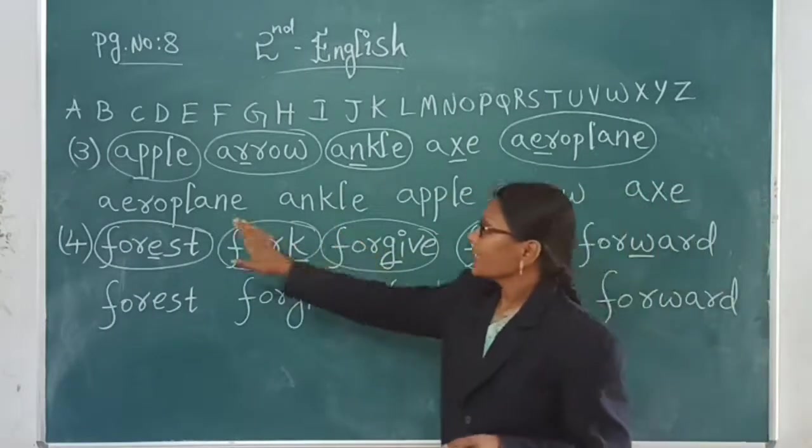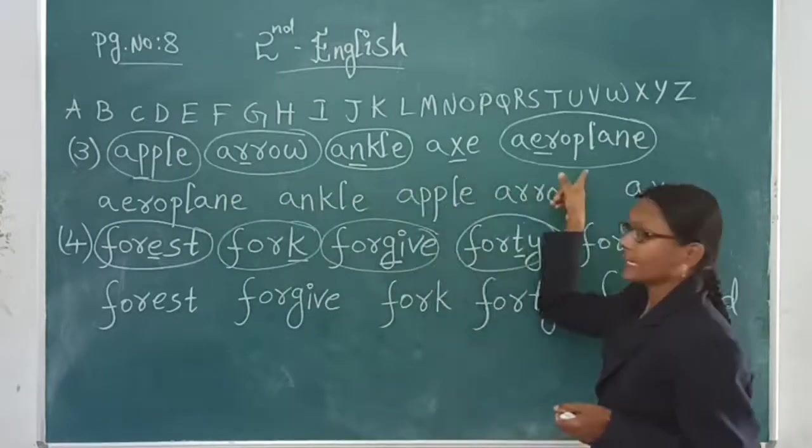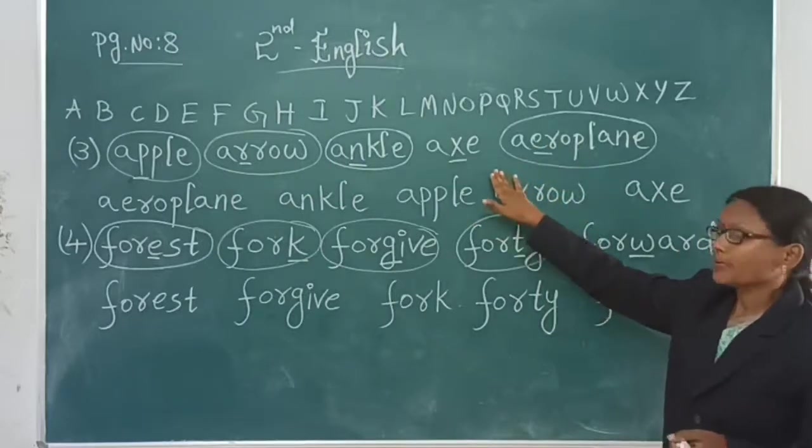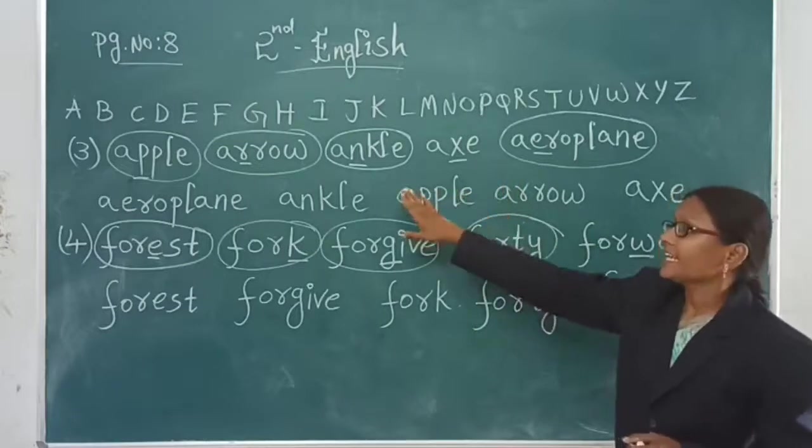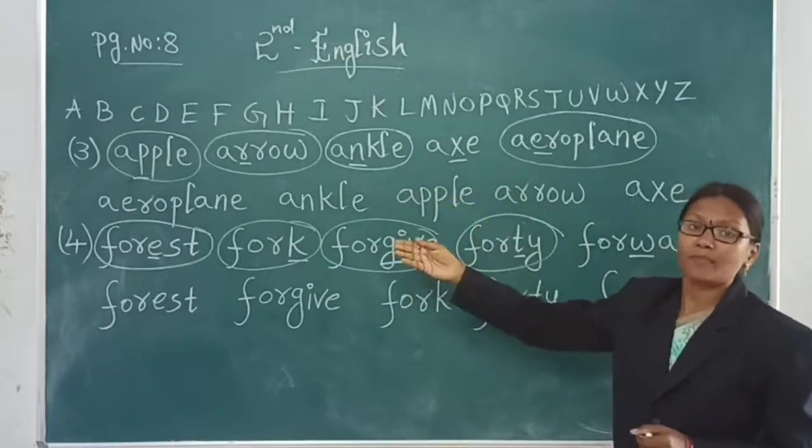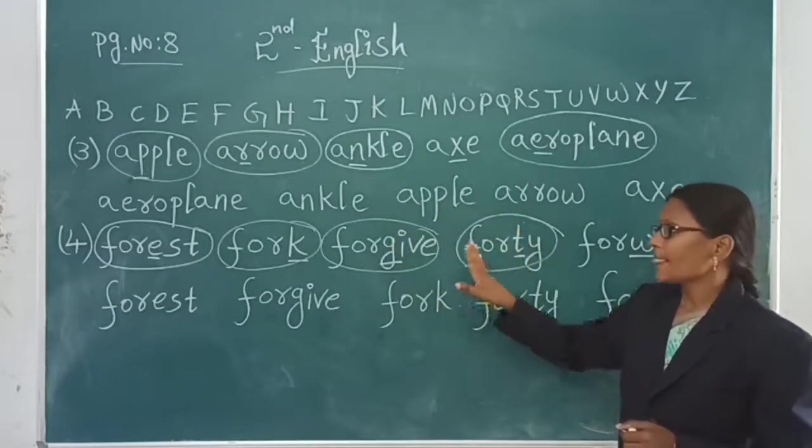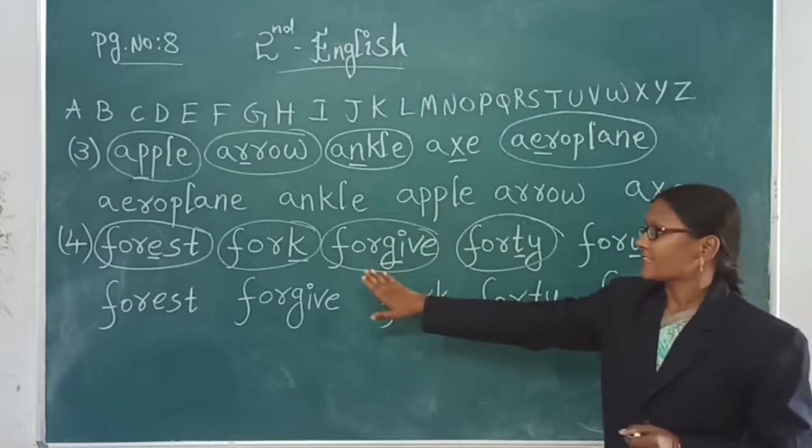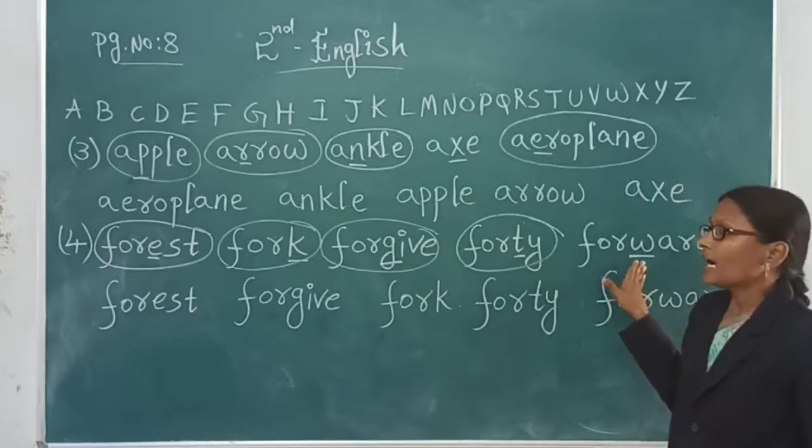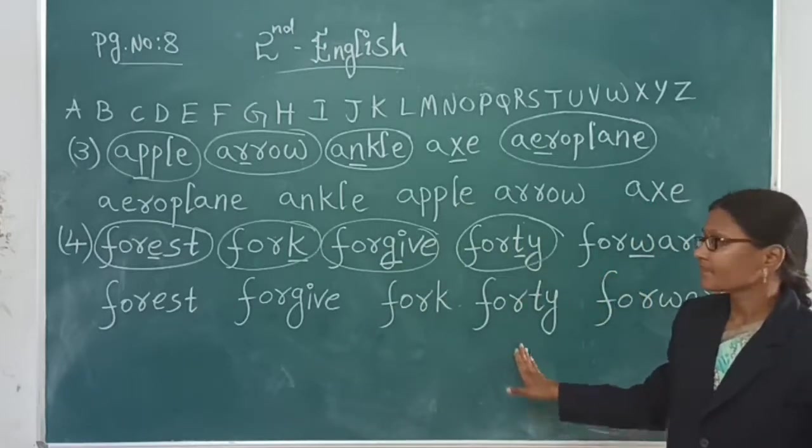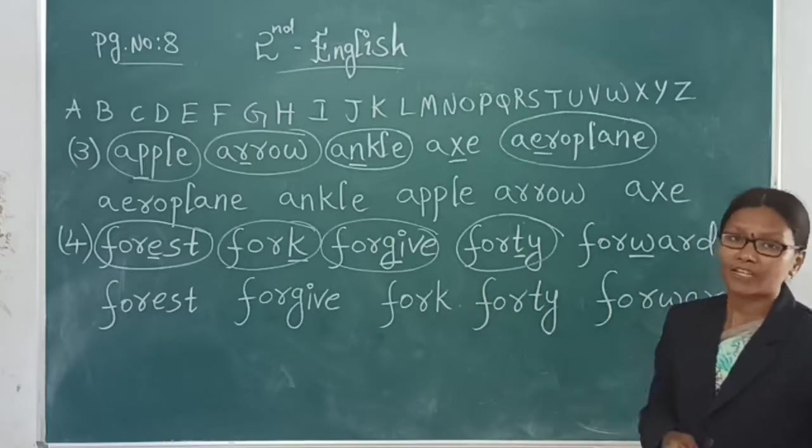So I repeat again, here question is apple, arrow, ankle, axe, aeroplane. Doing arrangement, first of all they are same, so we are seeing second letters. According to alphabetical order, we are framing the answer. Here also, forest, fork, forgive, forty, forward. Like this it is. Now according to the arrangement, first three letters are same, so we are going for the fourth one and framing the answer. Okay children?